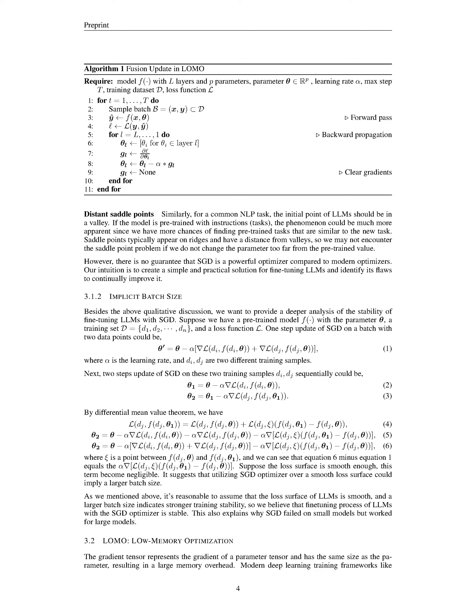Here's the interesting part. If the loss surface is smooth enough, the additional terms we just discussed can become insignificant. In practical terms, this means that a single update step with a larger batch of data can closely mimic several update steps with smaller batches — hence the term 'implicit batch size.' Given that we can reasonably assume the loss surface of LLMs to be smooth, this property suggests that fine-tuning LLMs with the SGD method could imply a larger batch size, which in turn indicates stronger training stability.